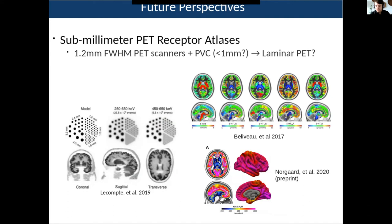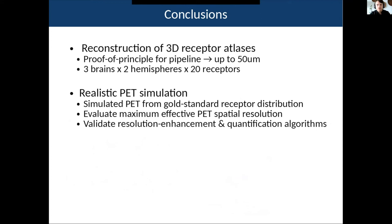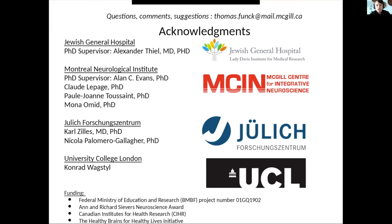In conclusion, we have a receptor pipeline that can, in principle, reconstruct three brains with both hemispheres for all 20 receptors. Using realistic PET simulation, we can assess how accurate PET is, what the maximum resolution we could hope to achieve is, and at what spatial scale we could incorporate PET data into a broader receptor atlas.